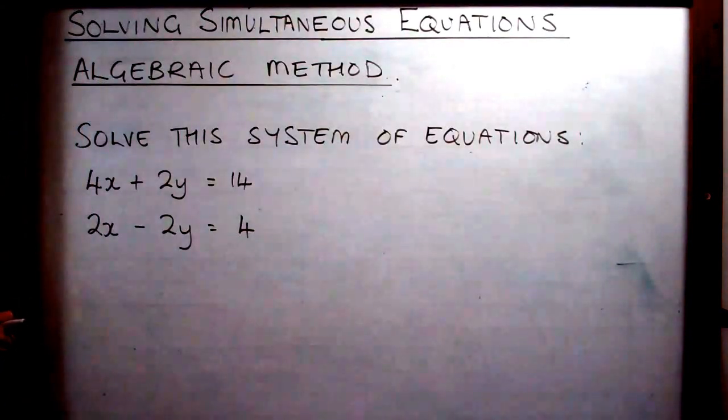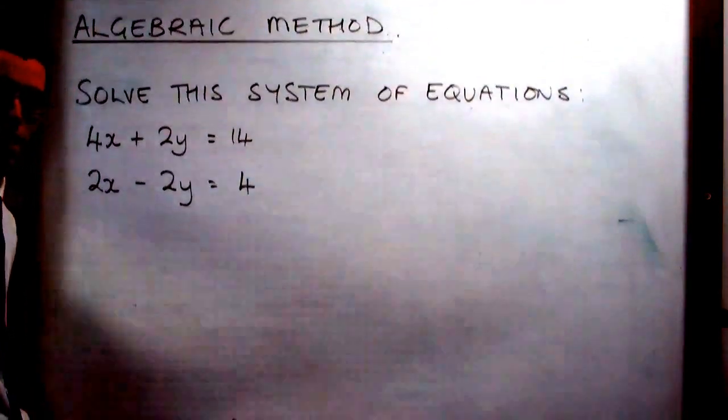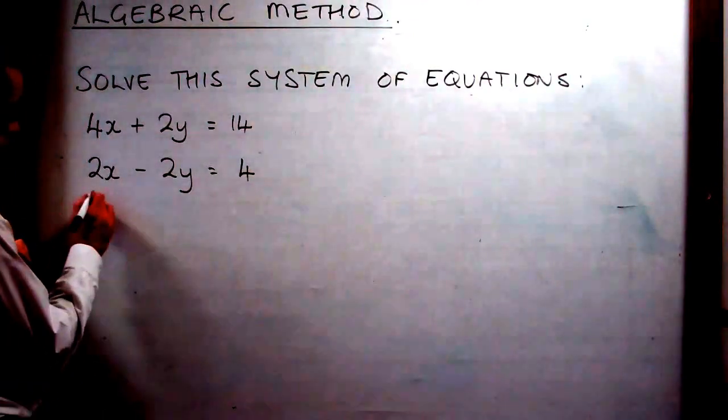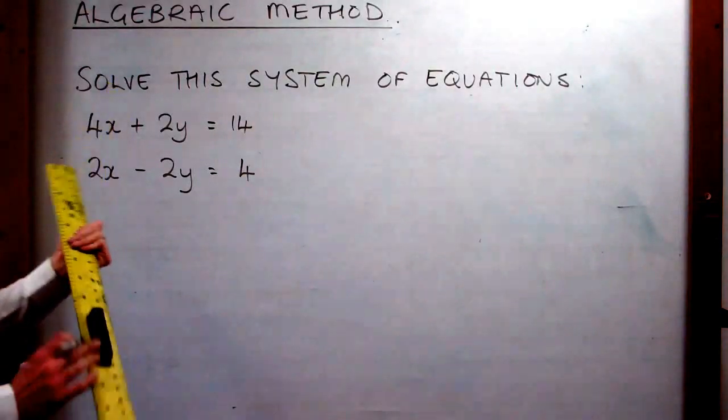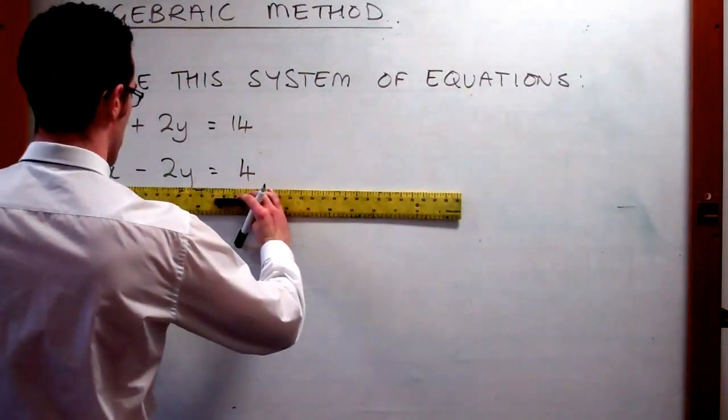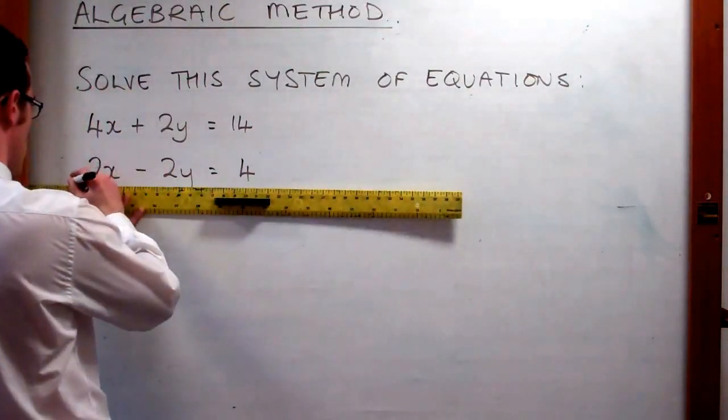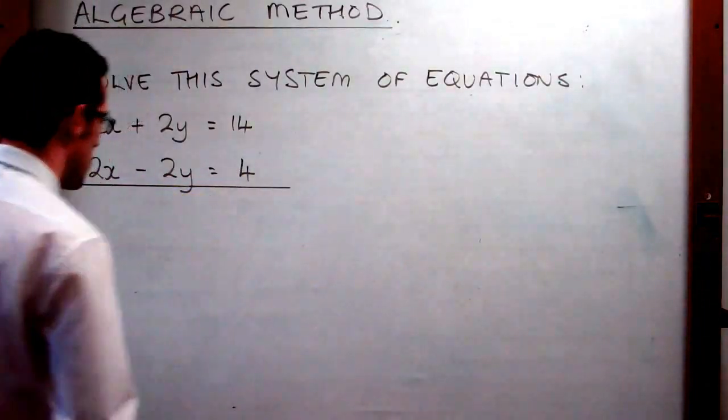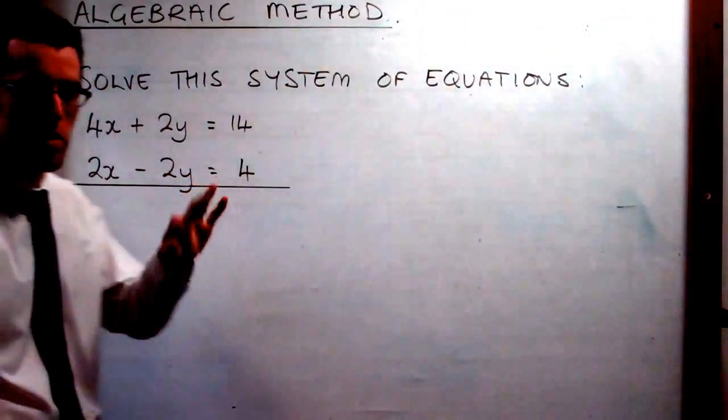So, we need to set up almost like an upstairs downstairs sum that you used to do in primary school with our equations. Watch. So, we're going to use a bigger one. So here we go. So we're going to copy this down. And then, I want you to draw a line like that and we're going to make an upstairs downstairs sum.